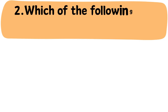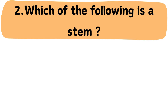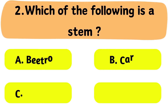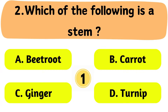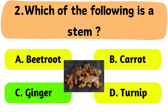Question No. 2: Which of the following is a stem? A. Beetroot. B. Carrot. C. Ginger. D. Turnip. The correct answer is Option C: Ginger.